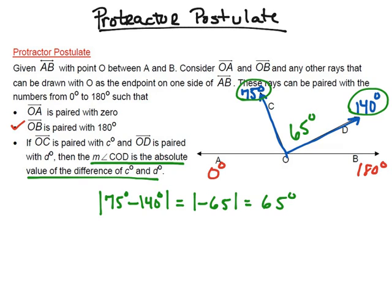We could actually do it another way. Instead of doing 75 degrees minus 140, notice if I had done the opposite — 140 degrees minus 75 degrees — we're still going to get 65 degrees, and the absolute value of 65 degrees is still 65 degrees. So how we subtract is not going to matter. We just need to keep in mind that it is going to be a positive value, because we're taking the absolute value.